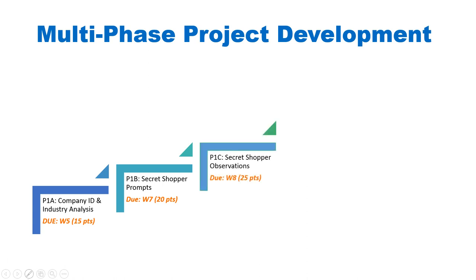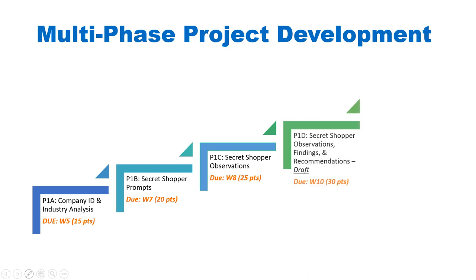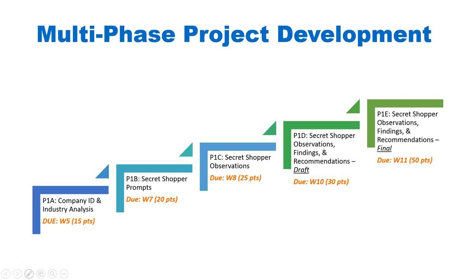Having produced the prompts, you can now observe and report your actual observations — these are your data points — due around Week 8, worth 20 points. You'll need to plan the next few weeks carefully. Then, having completed those three steps, you'll be able to draft your observations, findings, and recommendations in Week 10, which ultimately becomes the final product in Week 11.